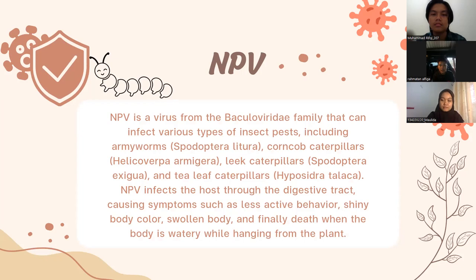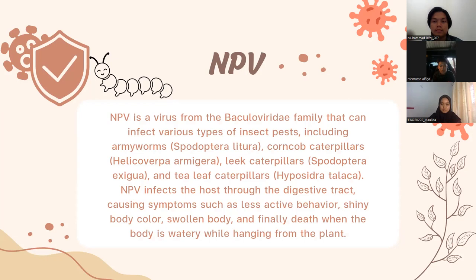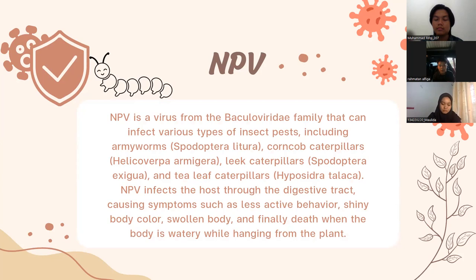NPV is a virus from the Baculoviridae family that can infect various types of insect pests, including armyworms Spodoptera litura, corn caterpillars Helicoverpa armigera, leaf caterpillars Spodoptera exigua, and leaf caterpillars Hyposidra talaca. NPV infects the digestive tract, causing symptoms such as decreased activity, change in body color, swollen body, and finally death when the body becomes watery while hanging from the plant.